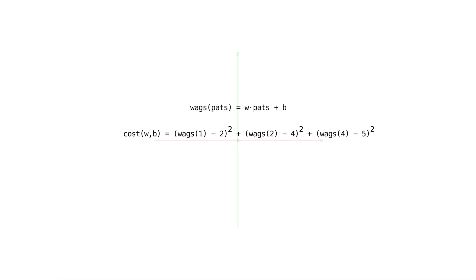Now if you remember our wags function, this is our model, it has two parameters, w and b. So when we plug in a number of pats, it really simplifies to just w times that number of pats plus b. So if we plugged in 1, we'd have w times 1 plus b.